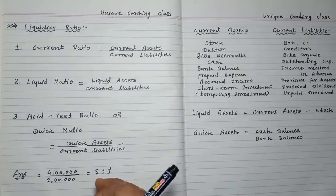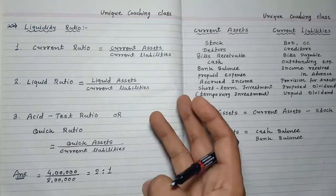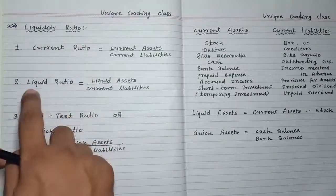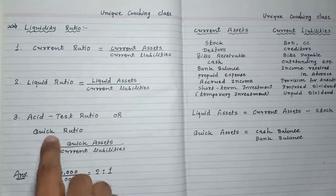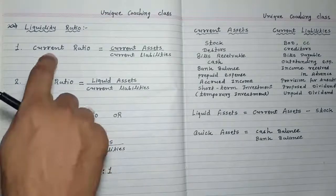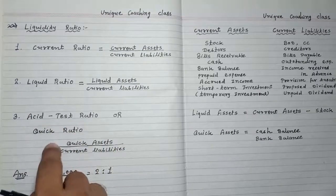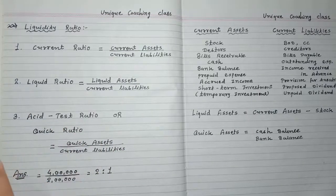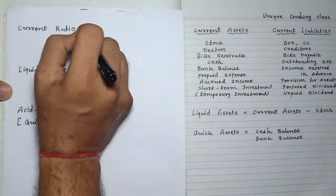Liquidity ratios are very, very simple — in my opinion, the easiest formulas in the chapter. There are only three liquidity ratios: current ratio, liquid ratio, and acid test or quick ratio. You have already learned current ratio and liquid ratio in standard 12, but in TY we also learn the acid test or quick ratio.